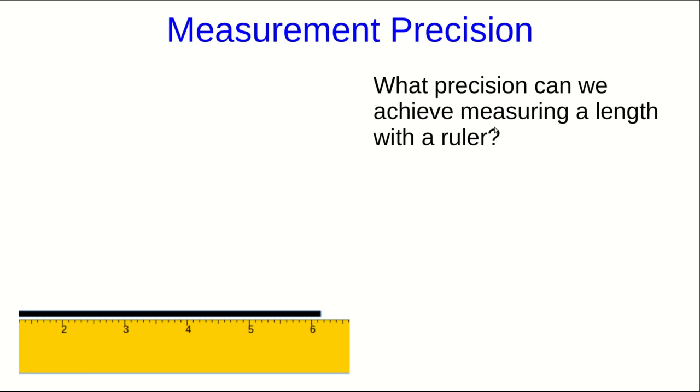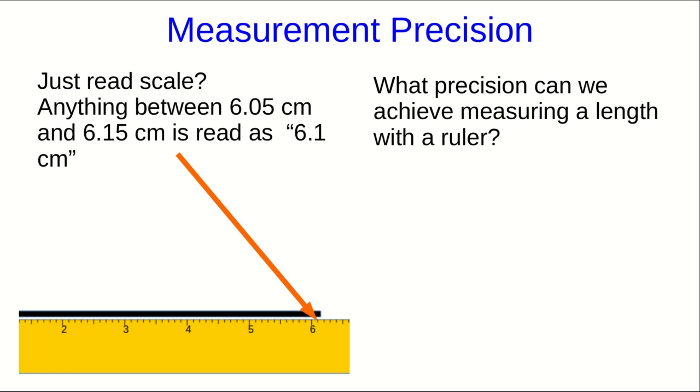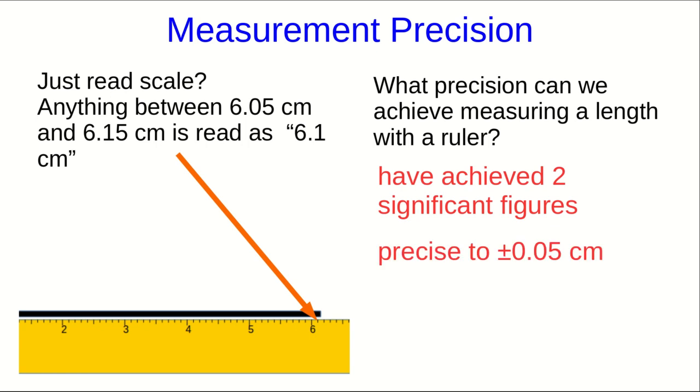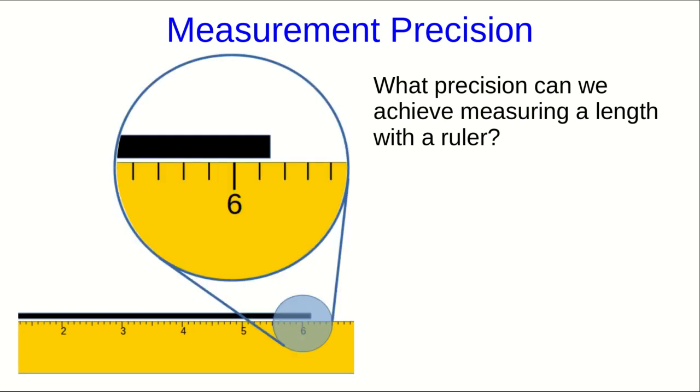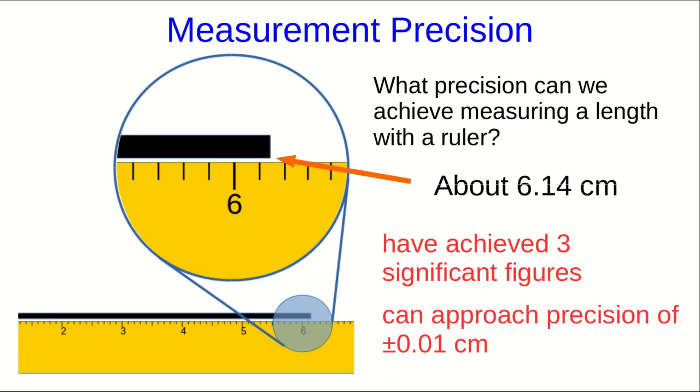What we are talking about here is precision. I want to highlight some of the issues that come up with precision in measurements. And so I'm going to give a couple of examples. Suppose we're measuring this object with a ruler. We need to know where the right end of the object is in relation to the scale. Well, we can just read the scale. It's closest to the 6.1 centimeter mark. But of course, that means anything between 6.05 and 6.15 is going to get read as 6.1 if we just measure to the closest mark. So doing that, we've achieved two significant figures, or precision of plus or minus 0.05 centimeters. But we can do better than that. If you look very closely, you can see it's a little past the 6.1 mark, but less than halfway to the 6.2 mark. And so we could estimate that it's about 6.14. Now we've got three significant figures, and we're perhaps approaching a precision of plus or minus 0.01 centimeters, depending on the reliability of that estimate. Maybe it's closer to plus or minus 0.02 centimeters.